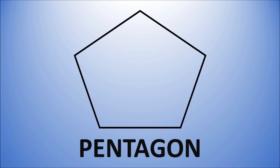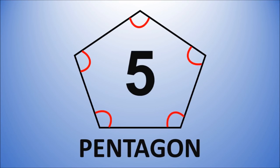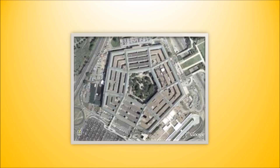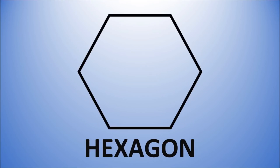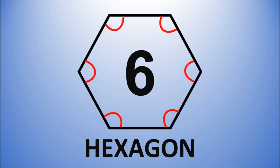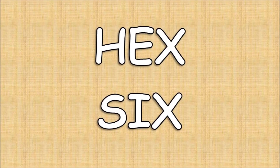A pentagon has five sides and five angles made from straight lines. The Pentagon building might come to mind. A pentagon has five sides. A hexagon has six sides and six angles made from straight lines.